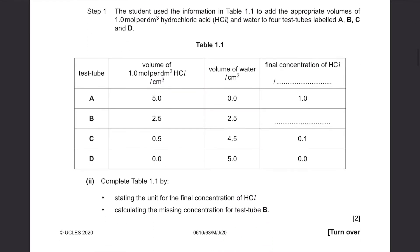Step 1. The student used the information in table 1.1 to add the appropriate volumes of 1.0 mol per dm cube hydrochloric acid, HCl, and water to four test tubes labeled A, B, C, and D. Complete table 1.1 by stating the unit for the final concentration of HCl. This is the concentration, and the unit for concentration is mol per dm cube. Calculating the missing concentration for test tube B, this is the missing part. Well, for test tube A, there was 5.0 cm3 of 1.0 mol per dm cube HCl, then there was zero water, but then in B, it decreased by half to 2.5, and that 2.5 was put here, which means that the concentration will decrease by half again and become 0.5.